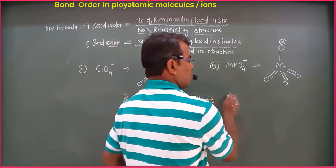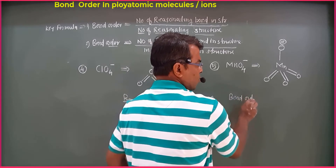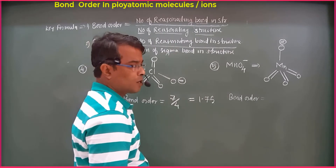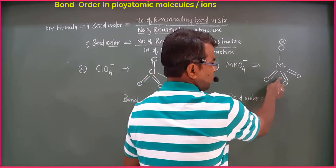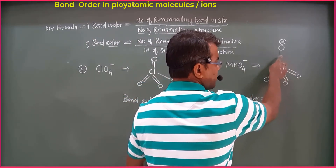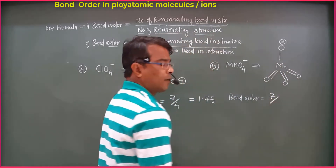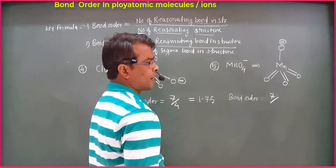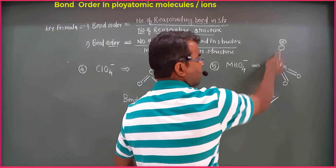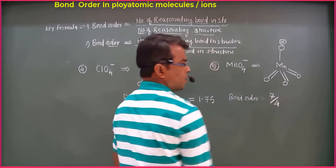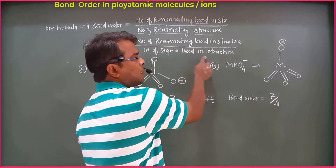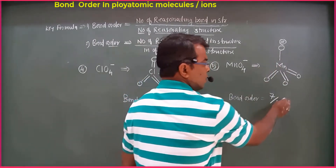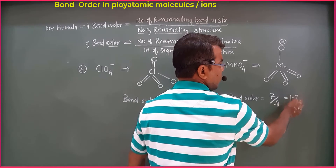We calculate the bond order using the formula. The number of resonating bonds in the structure is 7, divided by the number of resonating structures, which equals the number of oxygen atoms — 4. The number of sigma bonds is 4. This bond order is 1.75.